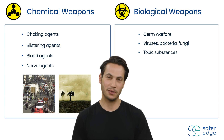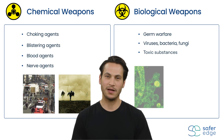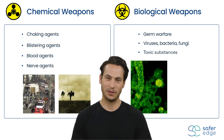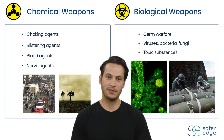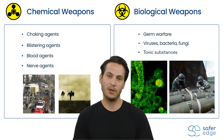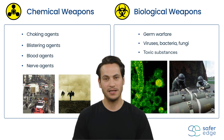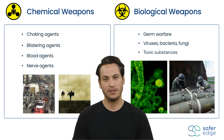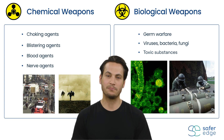Both chemical and biological agents can be delivered by conventional weapons systems, including artillery shells, missiles, bombs, sprays, canisters, or other dispensers.